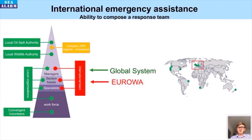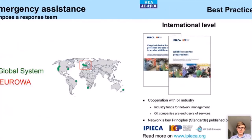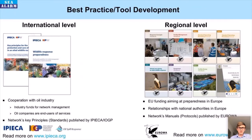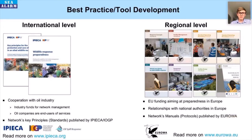This graph shows how international assistance from these two networks can be integrated into an IMS. At the international level there are two main key principal standards available for download from IPIECA to help industry better consider wildlife during incidents. At the regional level there are all sorts of manuals developed by EUROA to help the network assist European countries.